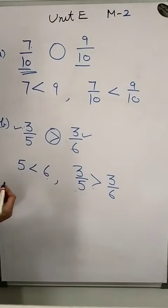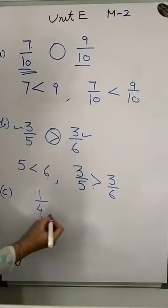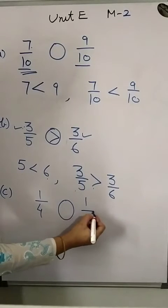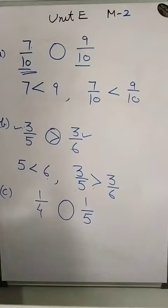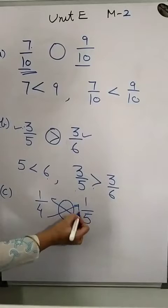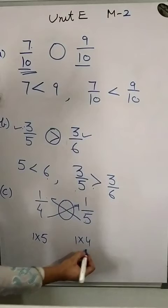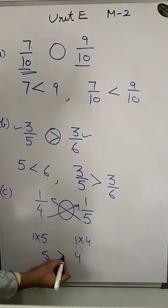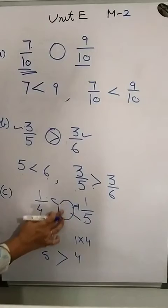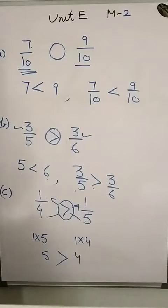Another method is cross multiplication. For example, comparing 1 upon 4 and 1 upon 5: cross multiply — 1 into 5 gives 5, and 1 into 4 gives 4. Since 5 is greater, 1 upon 4 is greater than 1 upon 5. You can use this method if you forget the other rules.